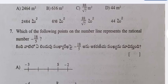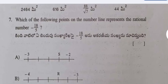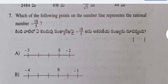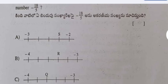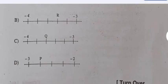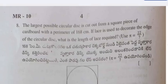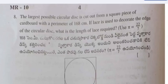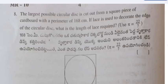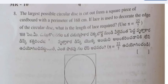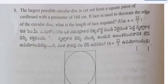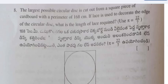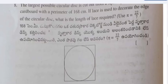Question 7: Which of the following points on the number line represents the rational number minus 18 by 5? Question 8: The largest possible circular disc is cut out from a square piece of cardboard with a perimeter of 168 centimeters. If lace is used to decorate the edges of the circular disc, what is the length of lace required?